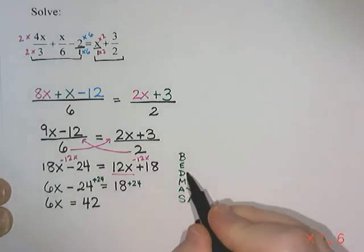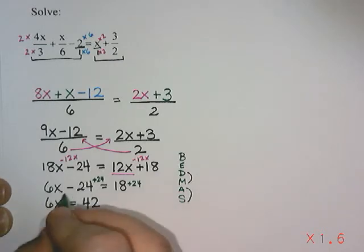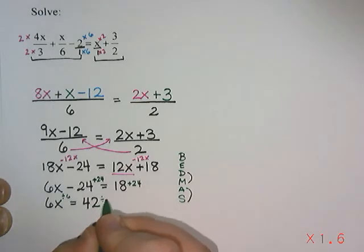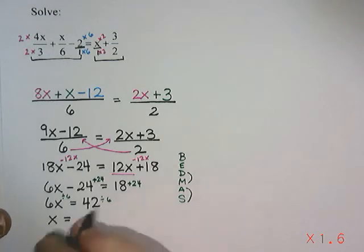And then we move on to any division or multiplication we might have. So I have a multiply by 6, so we're going to do the opposite and divide by 6. That leaves me with 1x or just x, and 42 divided by 6 is 7. So I get an answer of x equals 7.